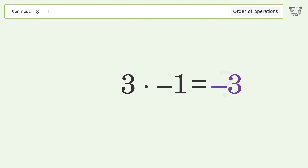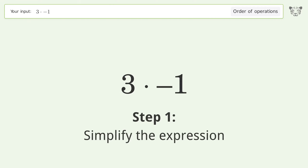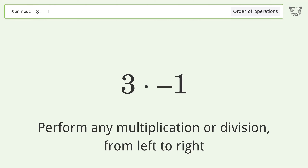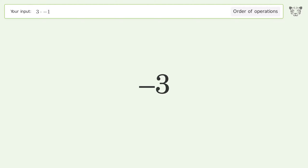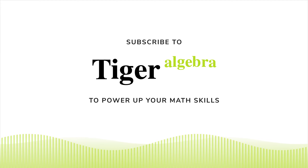You asked Tiger to calculate this. It deals with the order of operations. The final result is negative three. Let's solve it step by step: simplify the expression, perform any multiplication or division from left to right. Three times negative one equals negative three. And so the final result is negative three.